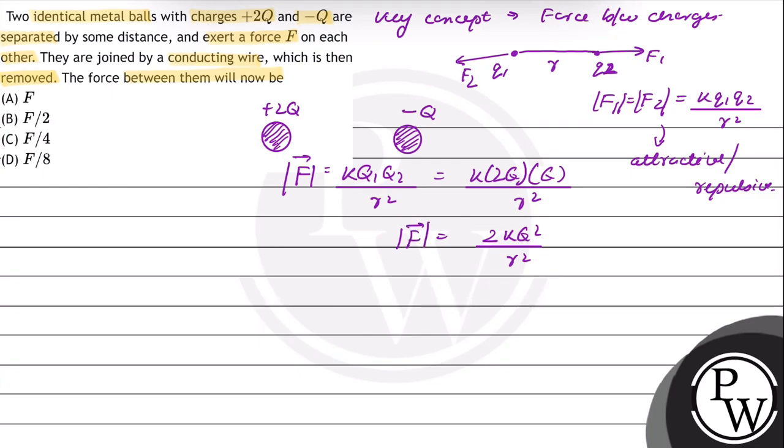Now they are connected by a conducting wire and then removed. So after connection the charges get equally distributed. When the wire is removed, the two metal balls will have equal charges.